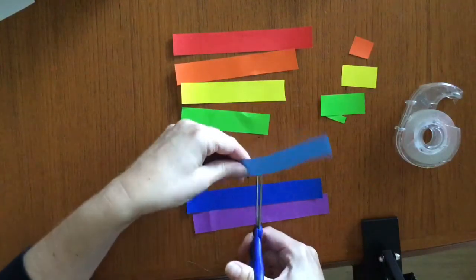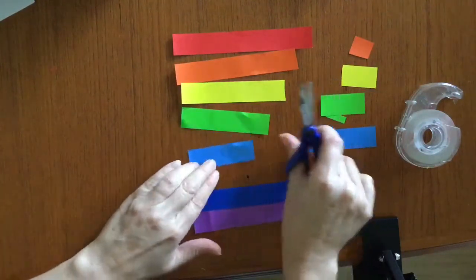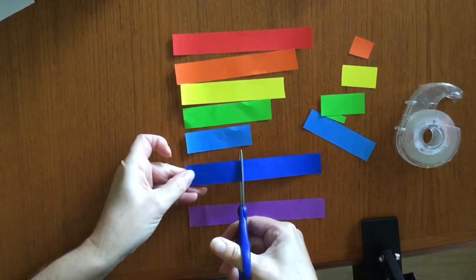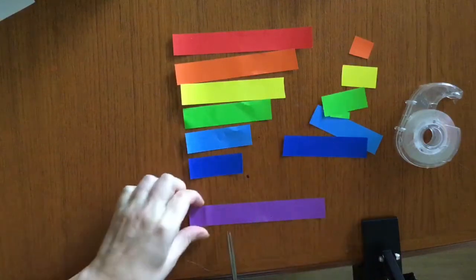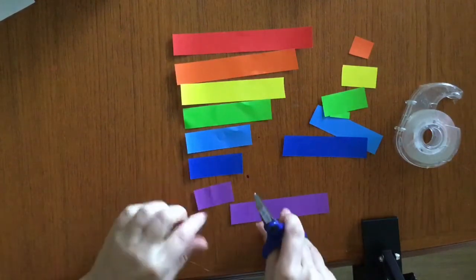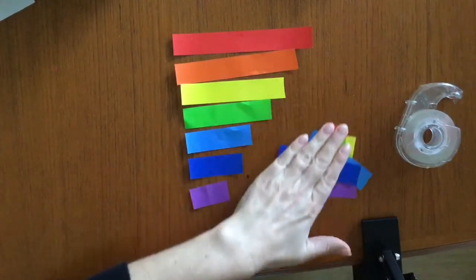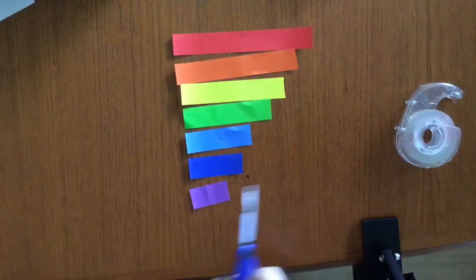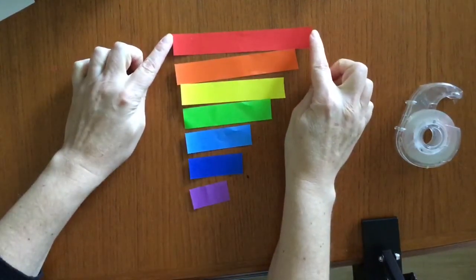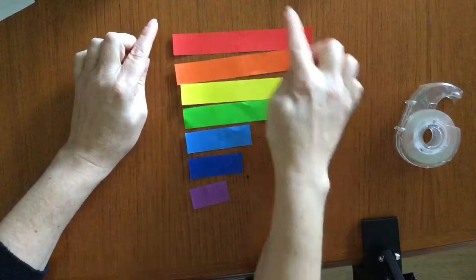Then we want a little bit off the blue, and then indigo, and violet's going to be really tiny. Okay there we go. So we don't need these, we can use them for something else. And we have red as the longest because red is always the top color of your rainbow.